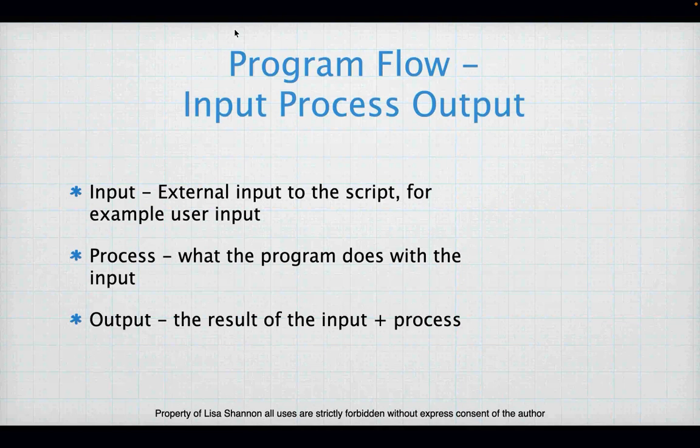Programs have a flow — all programs have the same flow: input, process, output. That's it. Input is anything external coming into the script or program — typing on a keyboard, a mouse, a game console. Process is what we do with that input: a mathematical calculation, displaying a lightsaber on screen. Output is the result of the input plus the process, such as displaying that lightsaber on the screen. Those are the three steps, and remembering them will make things less abstract.